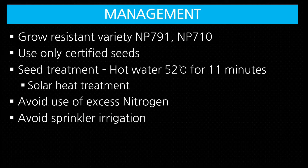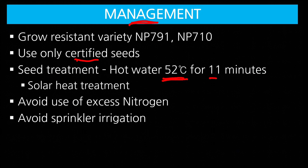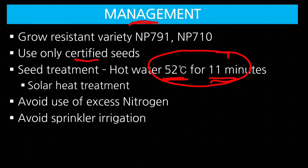Management of loose smut: Grow resistant varieties like NP791 and NP710. Use only certified seeds. Seed treatment: hot water treatment at 52°C for 11 minutes — remember this combination as it appears in competitive exams. Also: solar heat treatment, avoid excess nitrogenous fertilizer, avoid sprinkler irrigation.